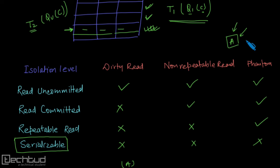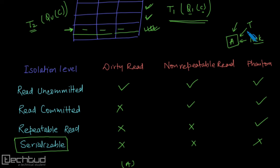That can be done by locking the data item. Whenever a transaction starts performing an action over a data item, you lock it for other transactions. This lock can be of different types, which we will learn. The key idea is that the data item is locked and another transaction cannot use it until the current transaction allows or finishes. All these things we will learn in the next chapter, where we will cover concurrency control techniques to enforce serializability and various protocols.